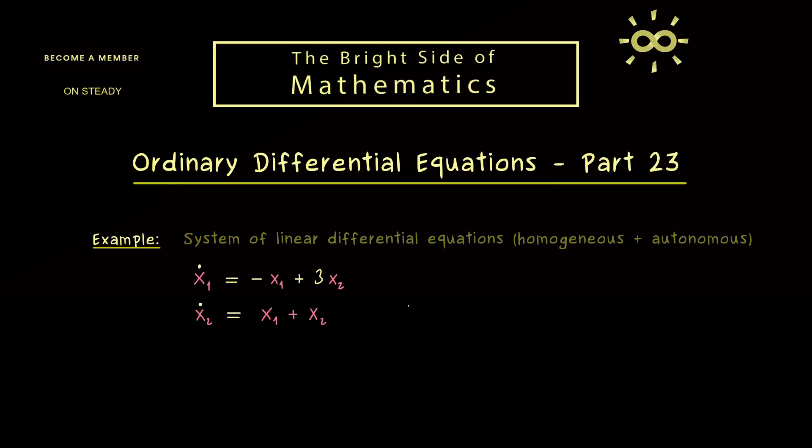And now the first thing you should do when you see such a system is to rewrite it as a matrix-vector multiplication. Then we can just write ẋ as a vector is equal to a 2x2 matrix times the vector x. And now we just have to check what are the entries of this matrix to represent this same ODE. So obviously we have minus 1 and 3, and 1 and 1. And as always, this matrix we will call A in the following.